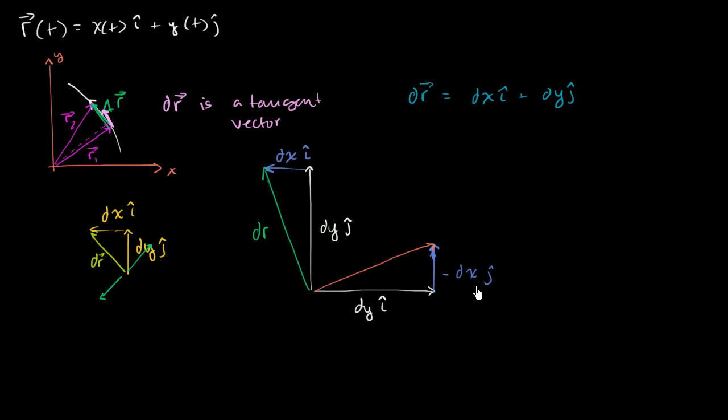So a normal vector is going to be dy i minus dx j. But then if we want to normalize it, we want to divide by that magnitude. So a normal vector, let me call this, I'll just call it a. A normal vector is going to be dy times i minus dx times j. Minus dx times j.